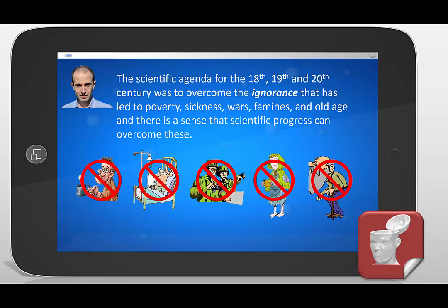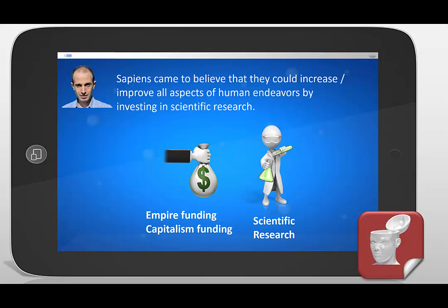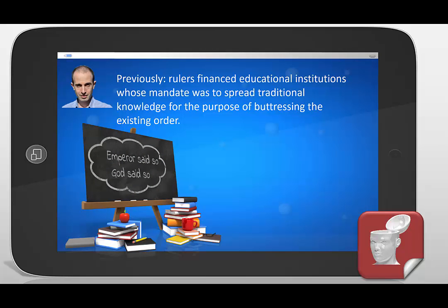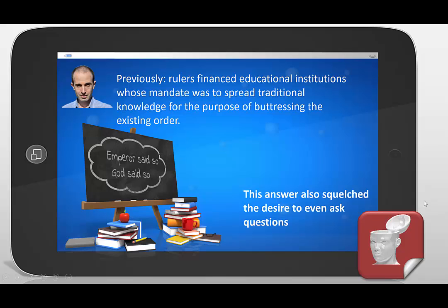This is an important item in Harari's position. He believes that sapiens came to believe they could increase and improve all aspects of human endeavors by investing in scientific research. So scientific research got funding from the empire and the capitalistic system in order to constantly improve all aspects of human endeavors. Previously, rulers would finance educational institutions, but those institutions' mandate was to spread traditional knowledge for the purpose of buttressing the existing order — the answer to questions was that the empire said so, or God said so.